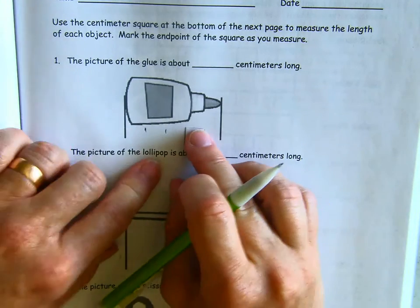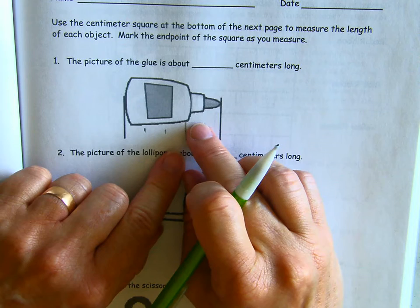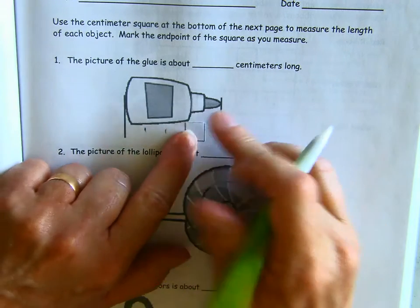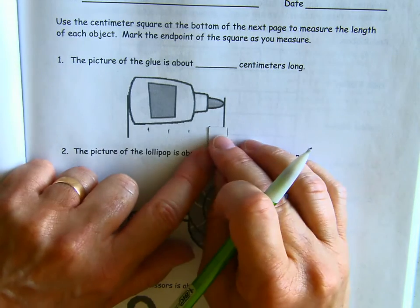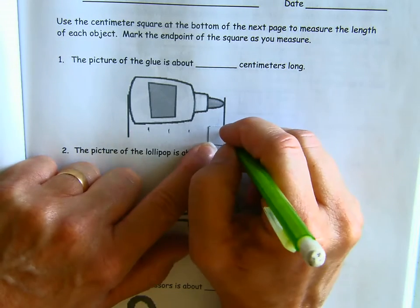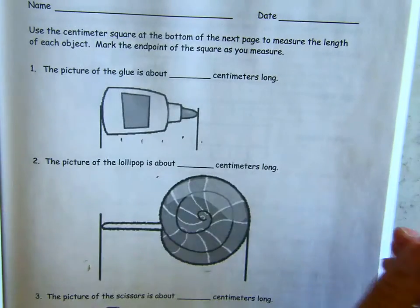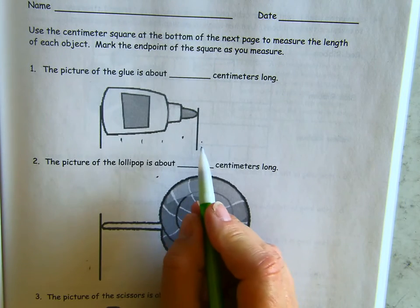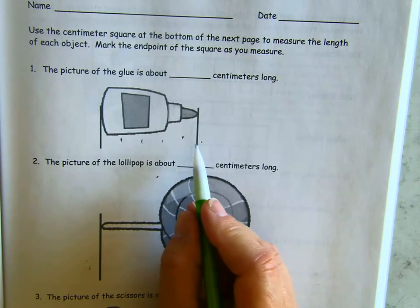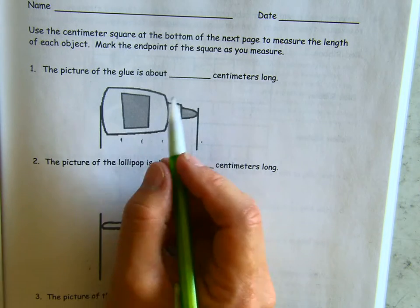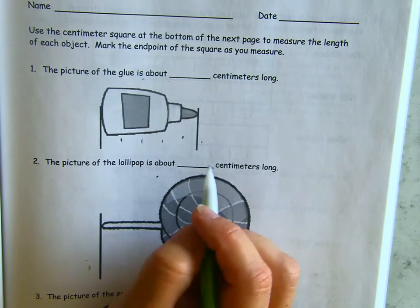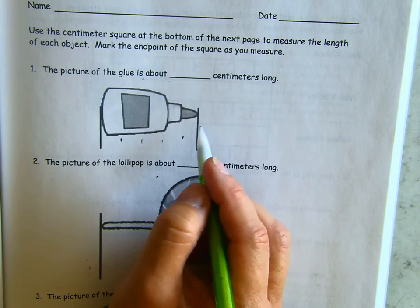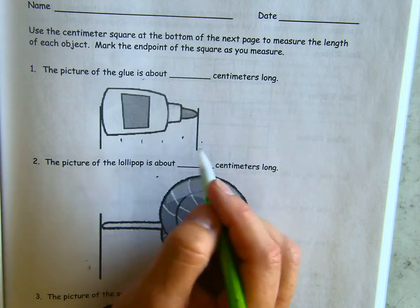Again, moving my centimeter square, cover up that mark and make a new one. And then make a new one. Now, when I've gotten here, it goes a little bit too long, right? Remember that we are saying about. We're not going to worry about trying to make sure it hits exactly because it won't.